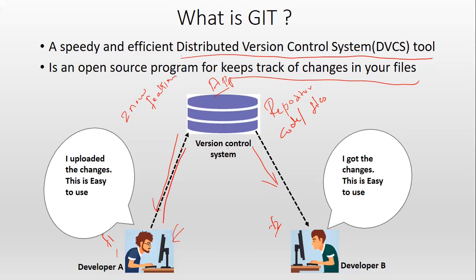Once development finishes, Developer A pushes his code to the repository. Developer B also finishes developing feature 2 and pushes his code to the repository. Now both pieces of code have been merged with the version 1 application, and the newly featured application will be called version 1.1.